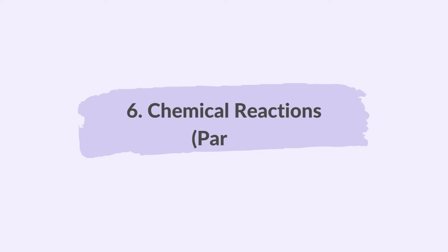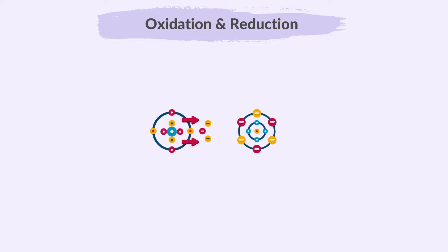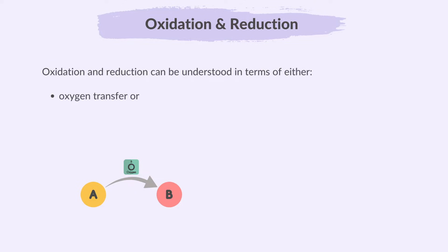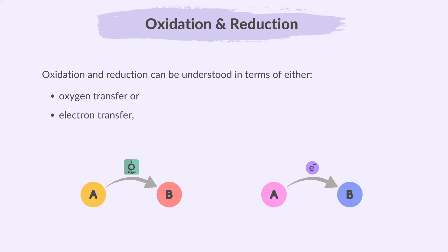In this video, we'll delve into the final part of Topic 6: chemical reactions. Oxidation and reduction are key chemical processes where electrons move between atoms, essential for many chemical reactions. Oxidation and reduction can be understood in terms of either oxygen transfer or electron transfer, depending on the context of the reaction.